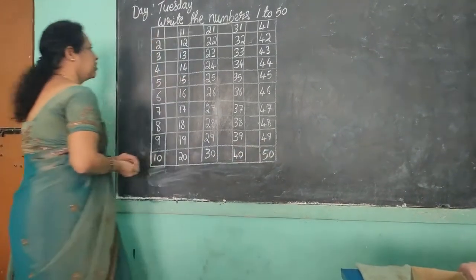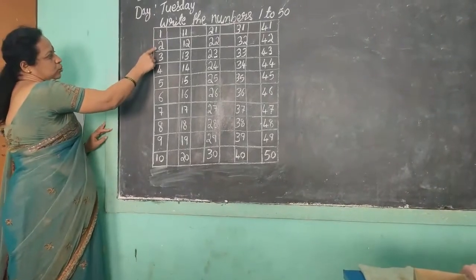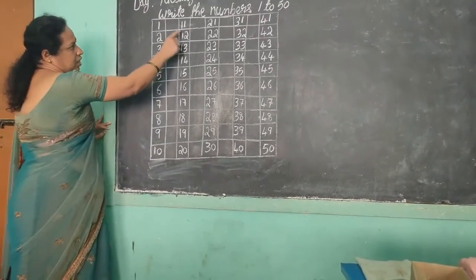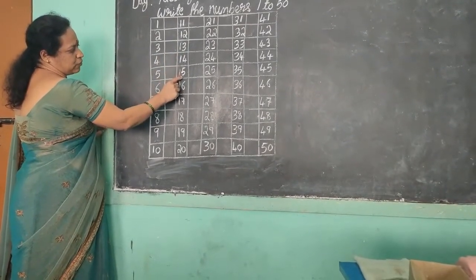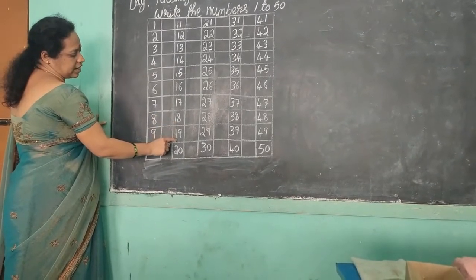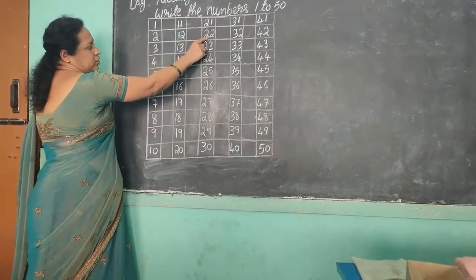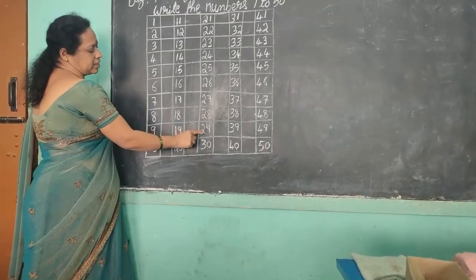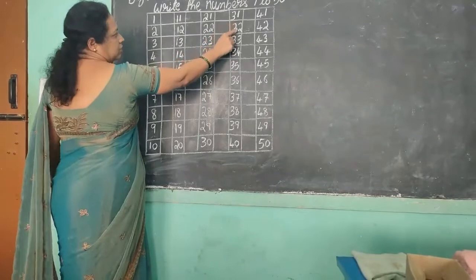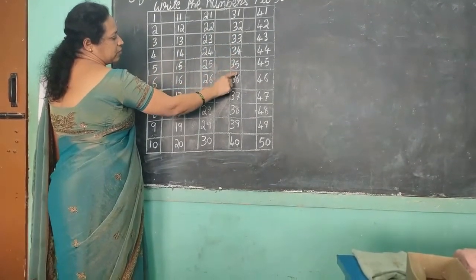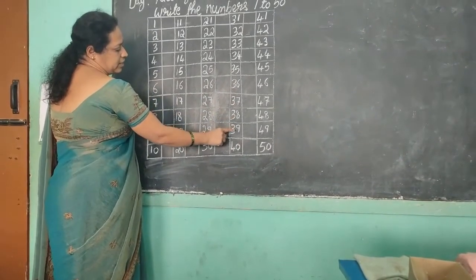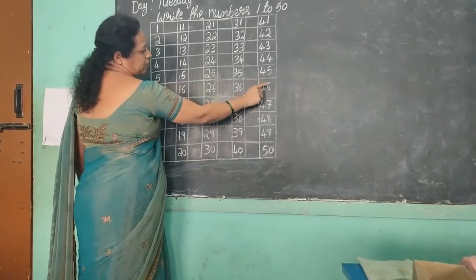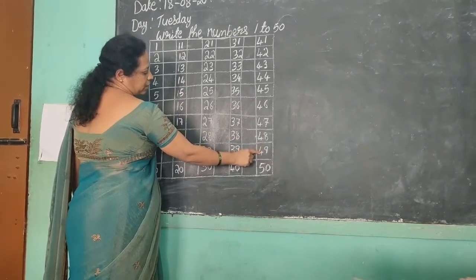1, 2, 3, 4, 5, 6, 7, 8, 9, 10, 11, 12, 13, 14, 15, 16, 17, 18, 19, 20, 21, 22, 23, 24, 25, 26, 27, 28, 29, 30, 31, 32, 33, 34, 35, 36, 37, 38, 39, 40, 41, 42, 43, 44, 45, 46, 47, 48, 49, 50. Thank you.